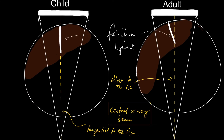In a child, because the liver is relatively large compared with the rest of the abdomen, this makes the falciform ligament look fairly perpendicular to the abdominal wall.